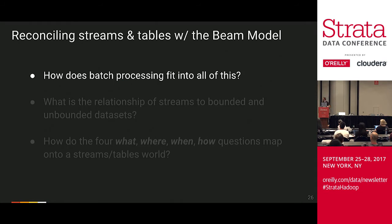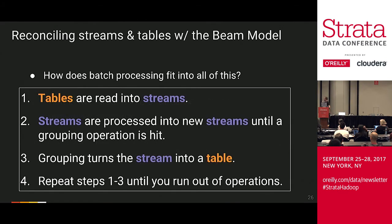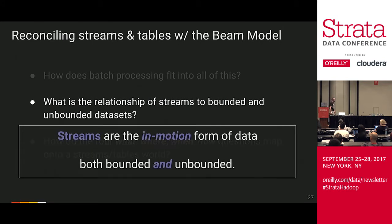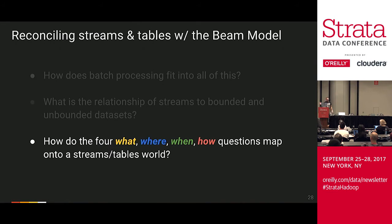We now know enough to answer the first two questions. How does batch processing fit in? Tables are read into streams; streams are processed into new streams until a grouping operation is hit; grouping turns the stream into a table; then repeat until you run out of operations. What is the relationship of streams to bounded and unbounded data sets? Streams are just the in-motion form of data, both bounded and unbounded. We had these bounded static input tables converted into streams, and the fact that they ended didn't affect whether the data was in stream form.